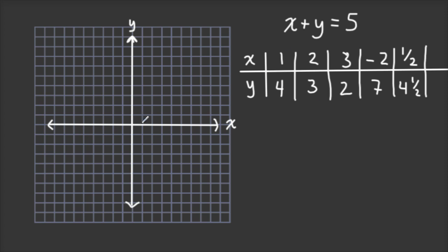We'll take these values that we already calculated, let's do 1 and 4. So 1 in the horizontal direction, and 1, 2, 3, 4 vertically, so I'll put a little X there. And then 2 and 3, 3 and 2, negative 2 and 7.